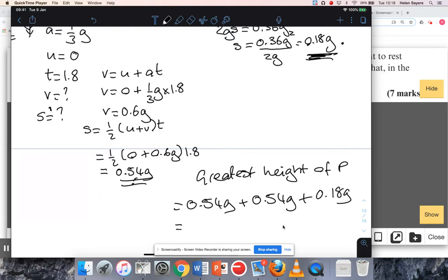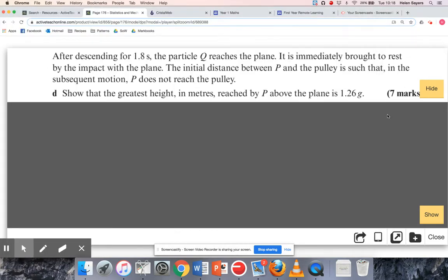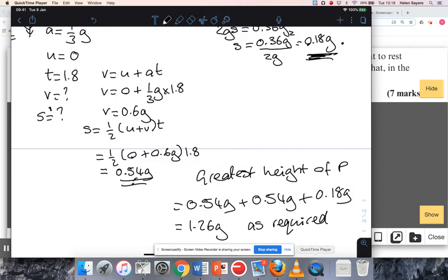We're going to hope that if we do 0.54 times 2 plus 0.18, we get... lovely, we do get 1.26g. And then it was a 'show that' question, so we're just going to add 'as required' to show that we have got our final answer.